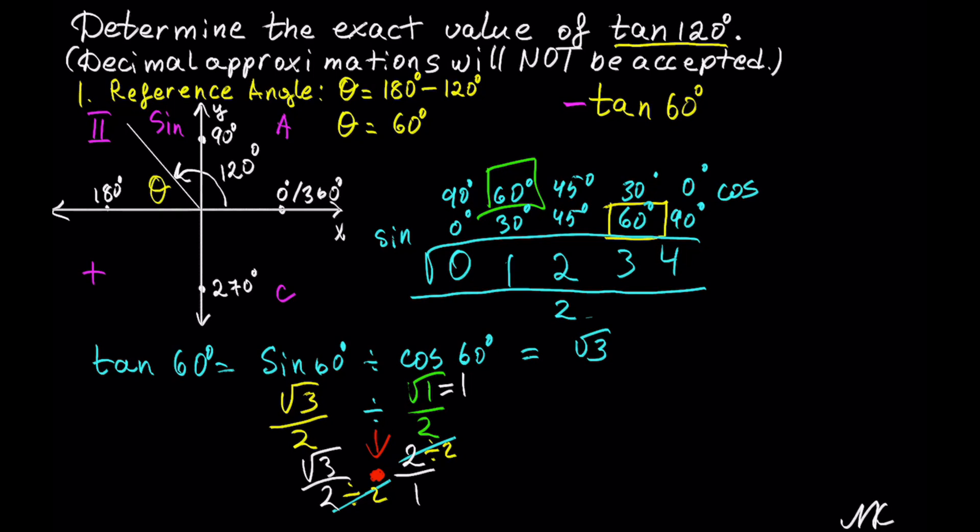Now we can go back to our problem. We need to calculate negative tangent of 60 degrees, so this is equal to negative radical 3, which means that the exact value of tangent of 120 degrees is equal to negative radical 3. And this is our solution. That's all.